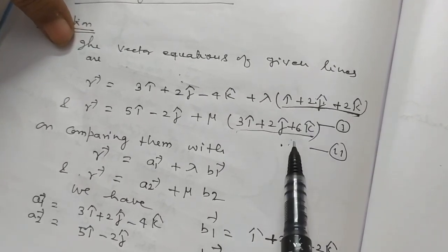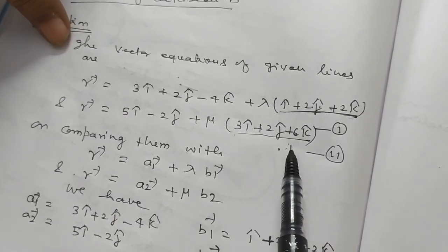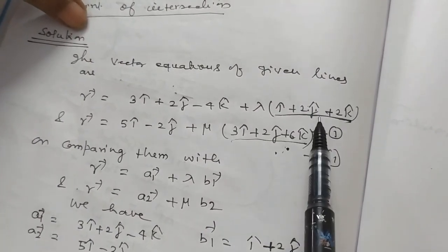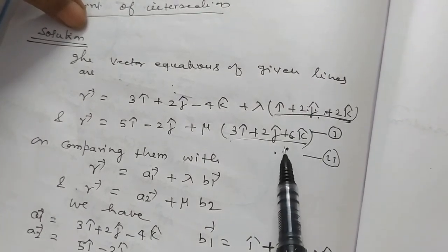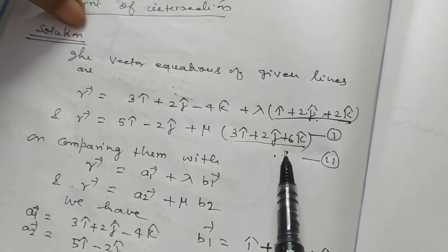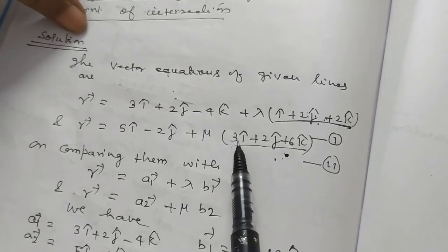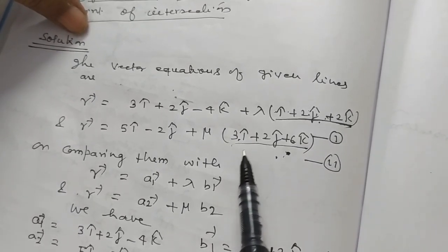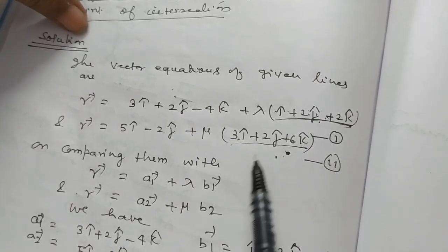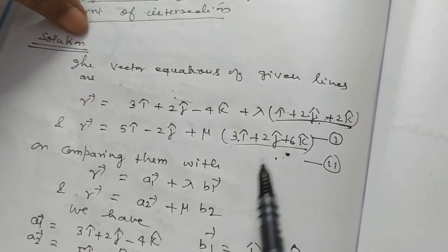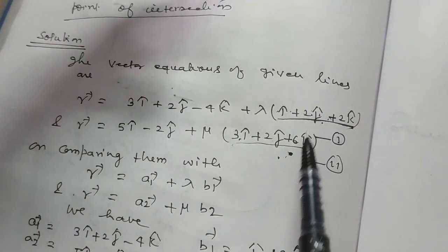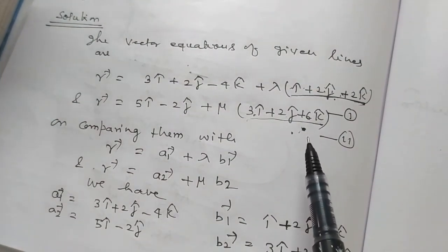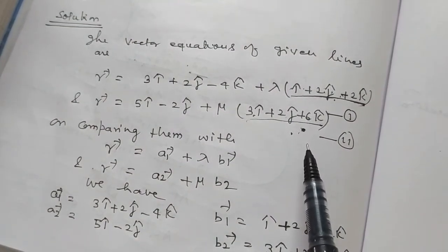These two lines will be parallel if one direction vector is lambda times the other. Checking: the direction vectors are i + 2j + 2k and 3i + 2j + 6k — these two are parallel vectors. When lines are parallel, the shortest distance formula uses cross product: |a2 - a1 cross b| / |b|. There is a cross product: (a2 - a1) cross b, divided by magnitude of b. So there is a projection involved.